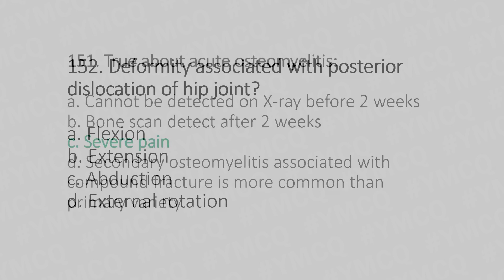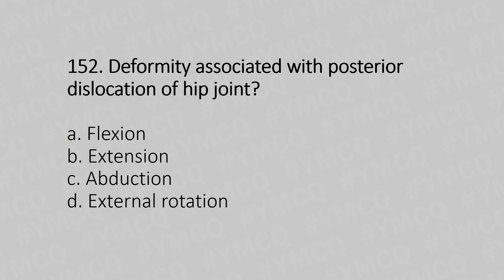Now let's move to question number 152. Deformity associated with the posterior dislocation of hip joint. Option A: flexion. Option B: extension. Option C: abduction. Option D: external rotation. And the answer is Option A: flexion.